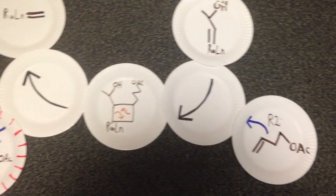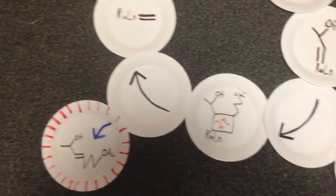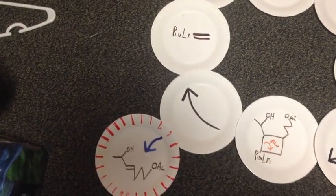Which also collapses and returns our catalyst, as well as our new R-group. Notice the E configuration.